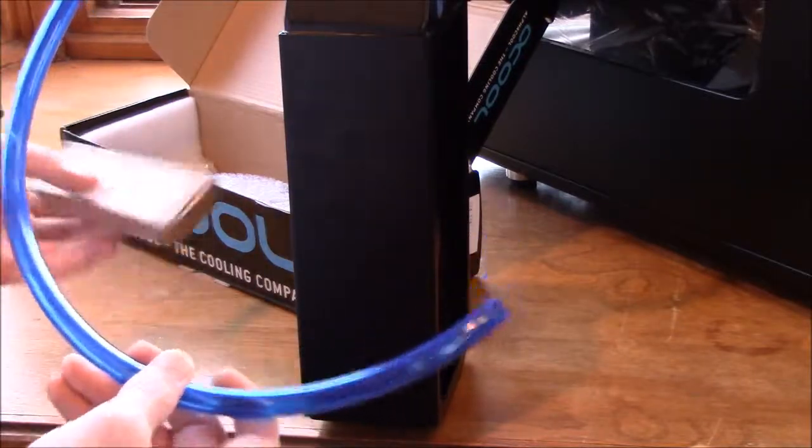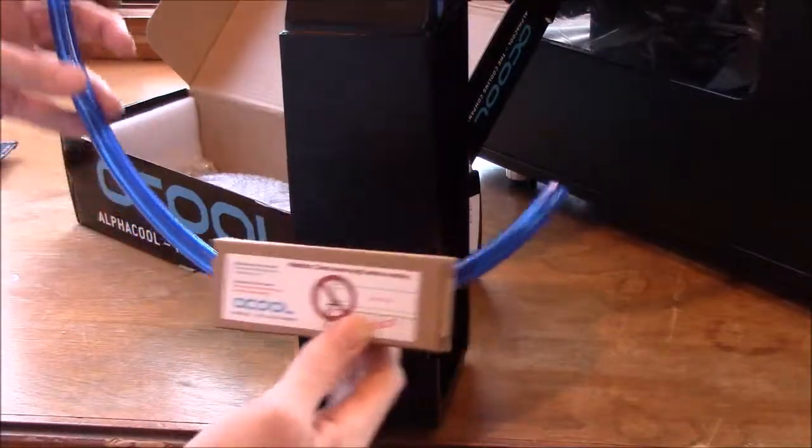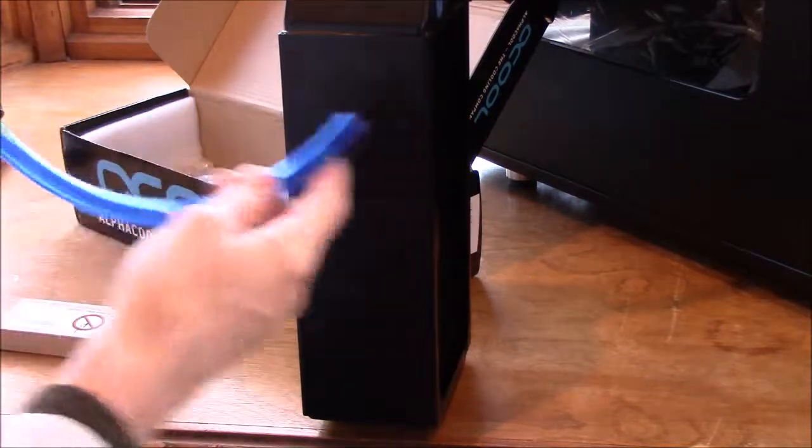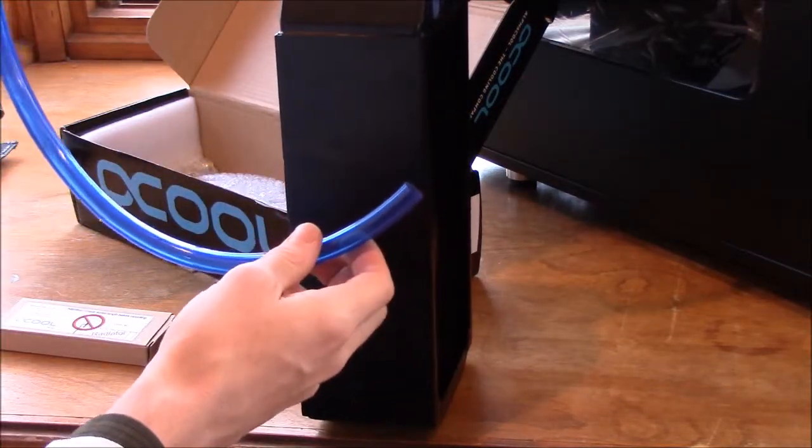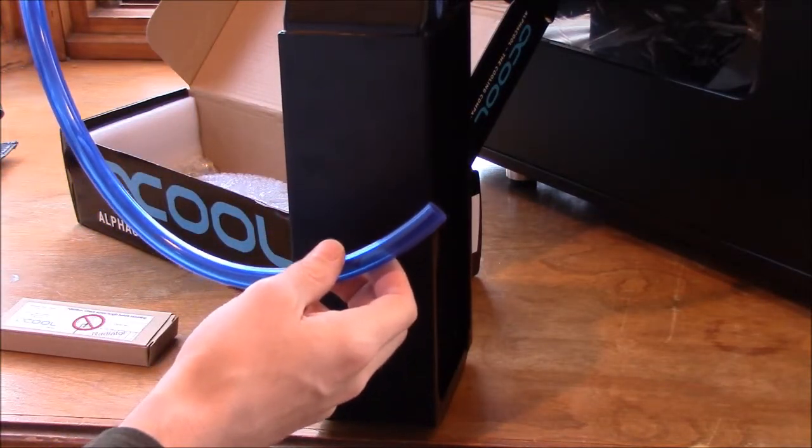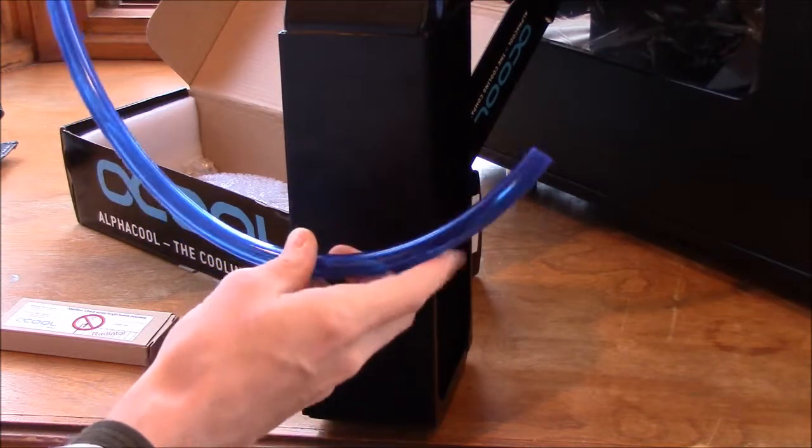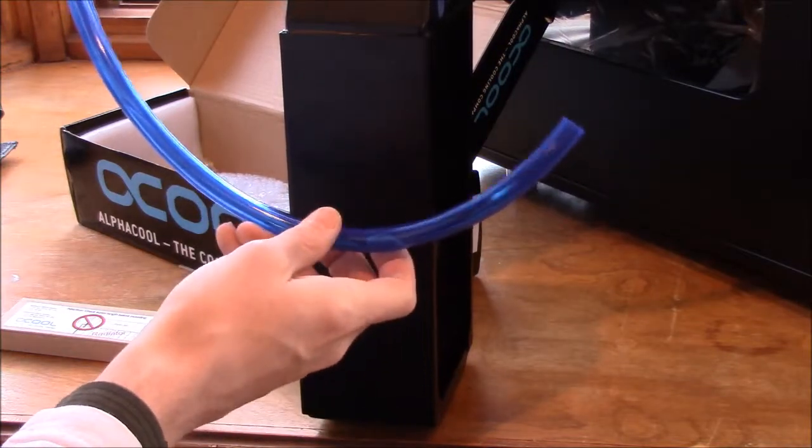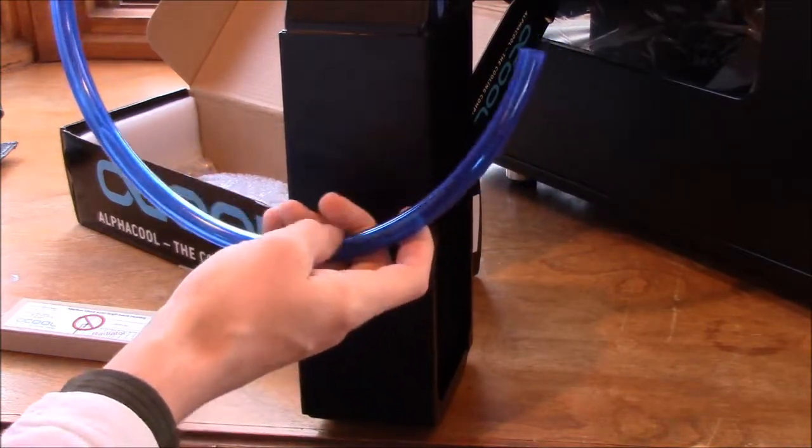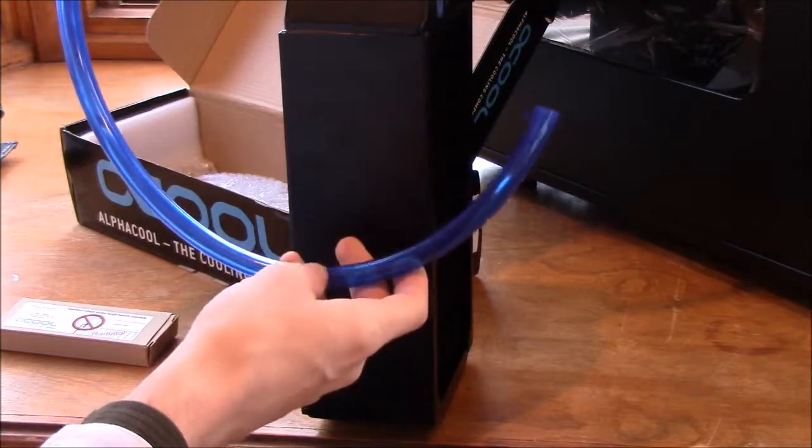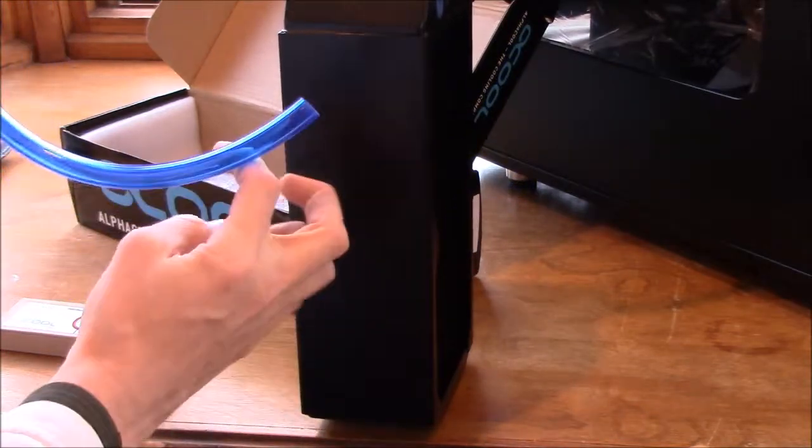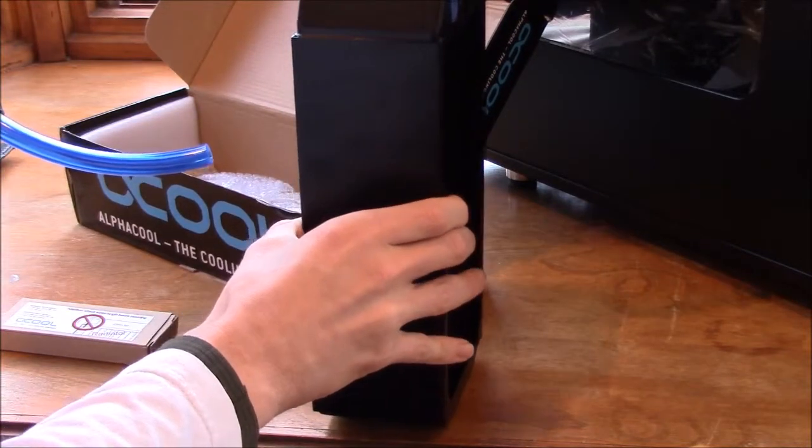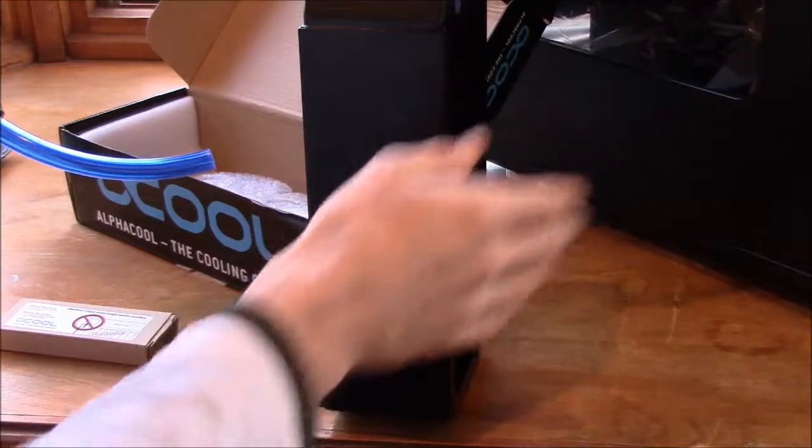So it comes with this box of screws. And this is the tubing that I'm going to be using with it. It's the Primo Chill Blue, whatever it's called. Advanced, like LRT, I think. So it's basically the best tubing on the market, I've heard. The Primo Chill tubing. So I'm going to be using this and I'm going to be mounting the radiator in the front of my case.